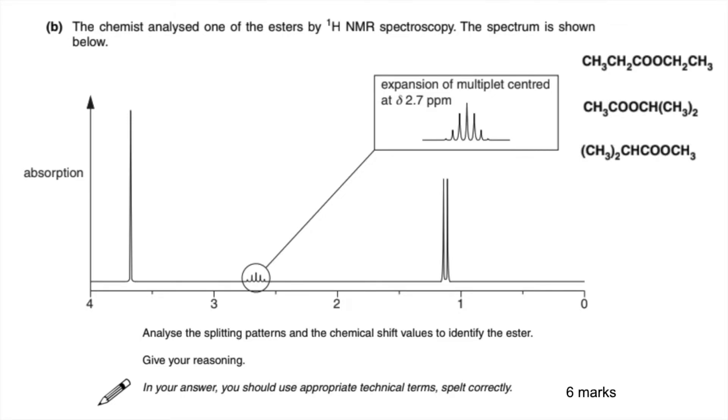So the first thing we can do is rule out the top one. So I'll just explain why. This one here has got one, two, three, four different proton environments. Whereas the spectrum, we've only got three peaks. So it can't be that one.